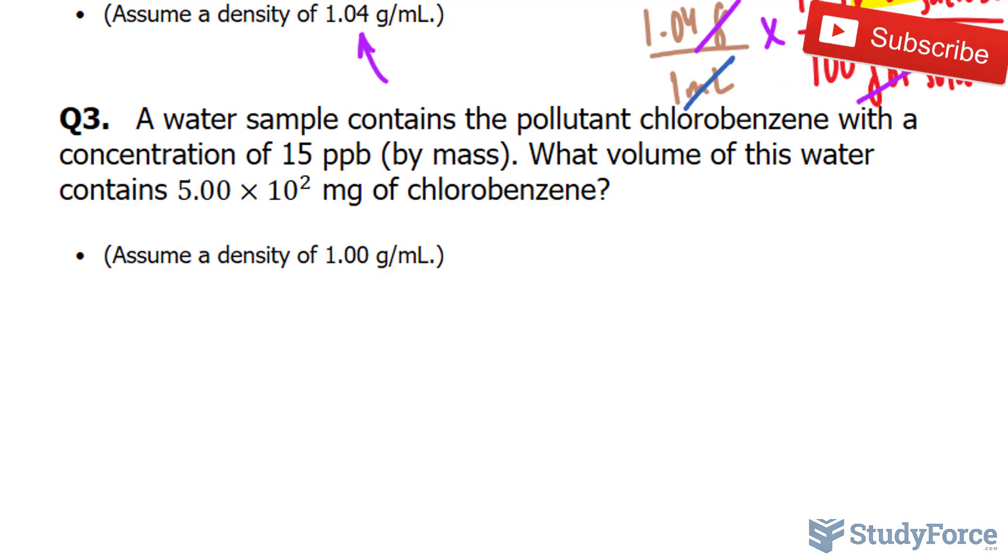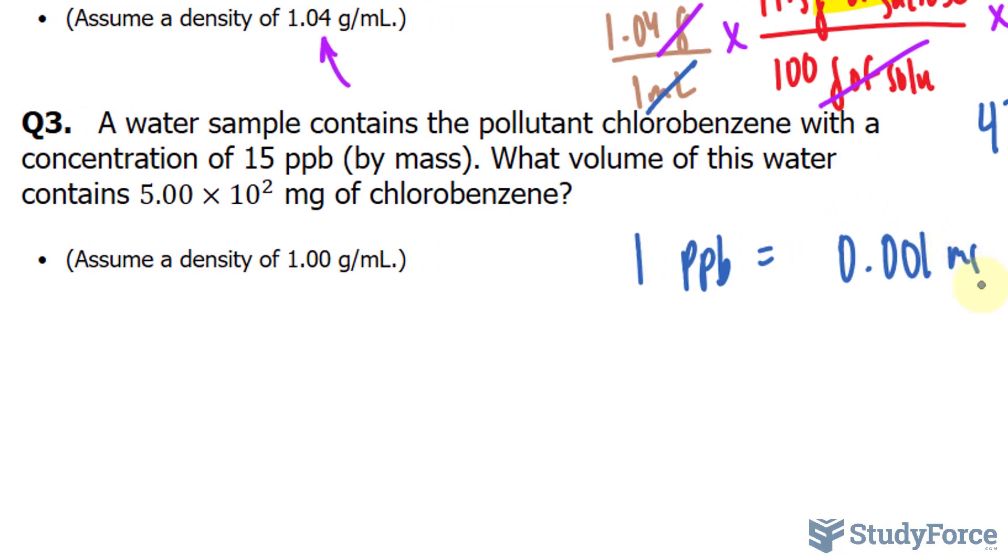And there's a conversion ratio between parts per billion and milligrams per liter and it's shown right here. One part per billion is equal to 0.001 milligrams per liter. So with that being said,